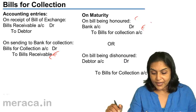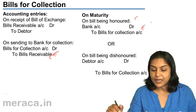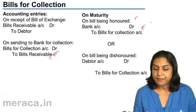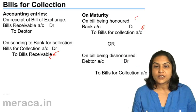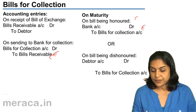On the other hand, if the bill is dishonored, the entry becomes debtor account debit to bills for collection.